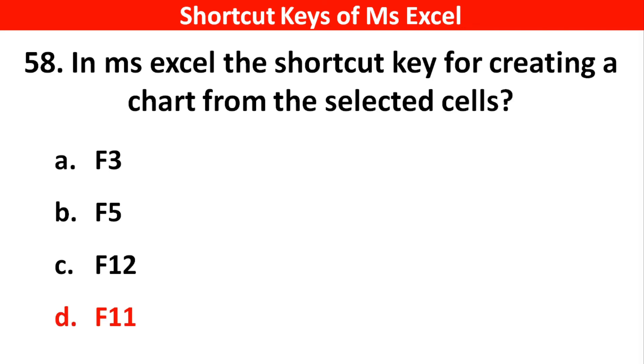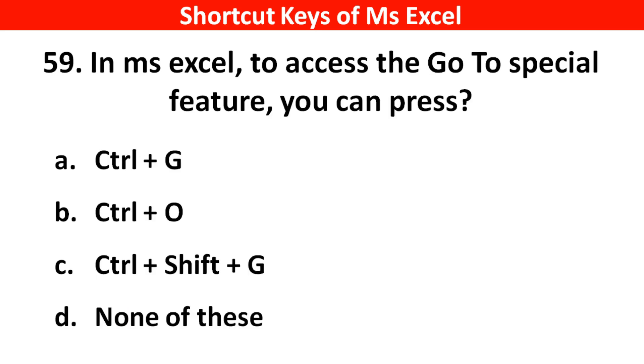In MS Access, the shortcut key for creating a chart from the selected cells — right answer is option D: F11.